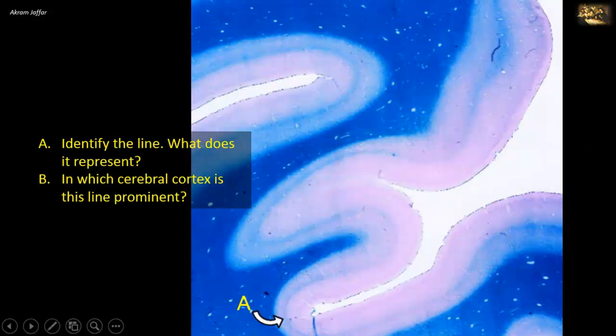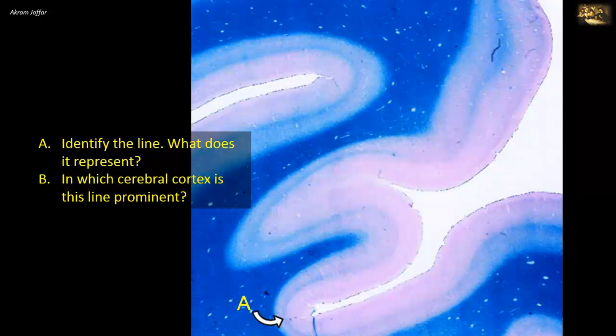Identify the line. What does it represent? In which cerebral cortex is this line prominent? In this stained section, the blue stain is staining the white matter — that is to say, the nerve fibers. So the line is formed by a bunch of nerve fibers passing tangentially, that is to say parallel to the surface of the cerebral cortex.